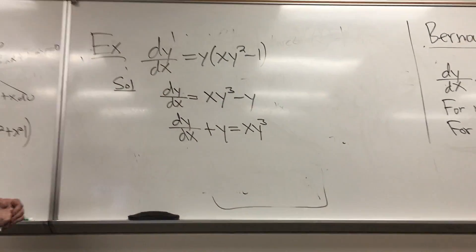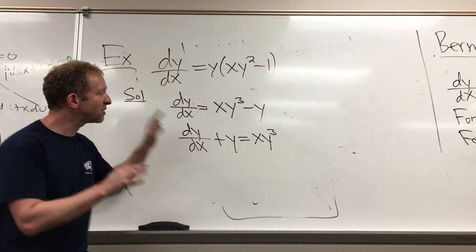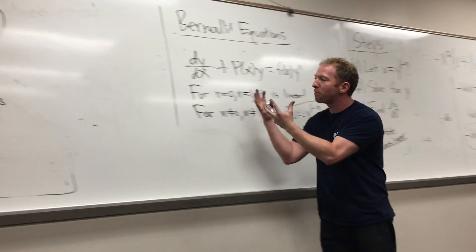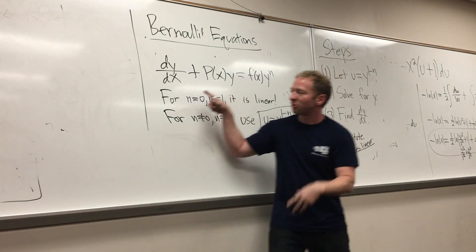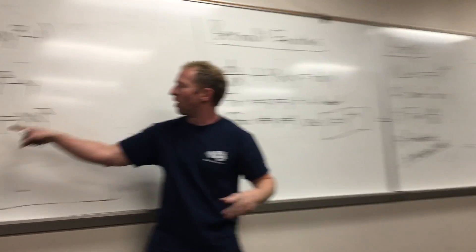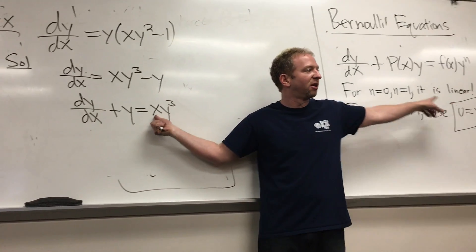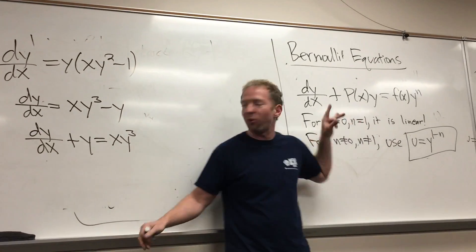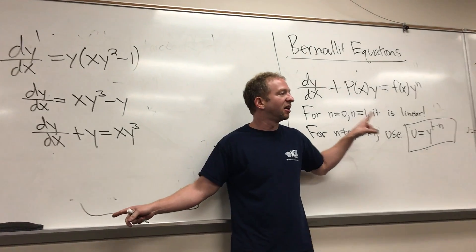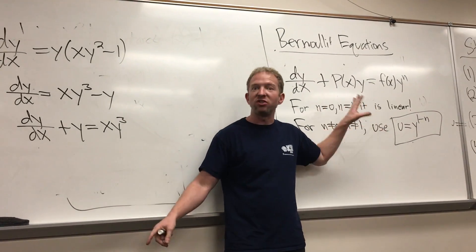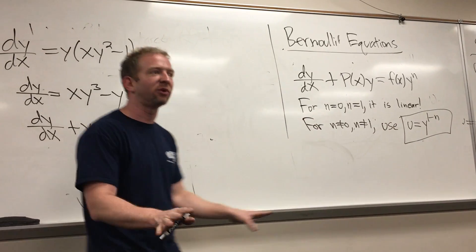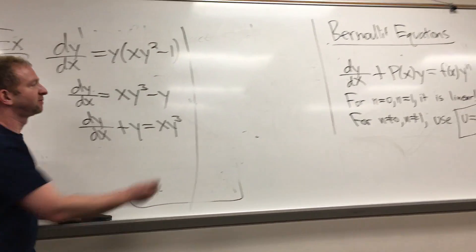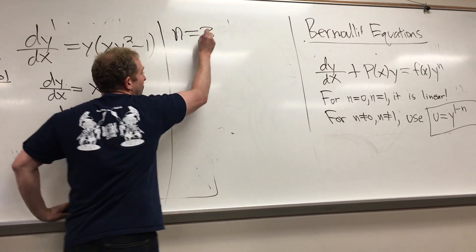Because it has to fit the form of the Bernoulli, right? So this is: dy/dx + y = x·y³. Now you see it perfectly fits the form of Bernoulli. P(x) is equal to 1, f(x) is x, and most importantly, our value of n is 3. So n = 3 — super key.